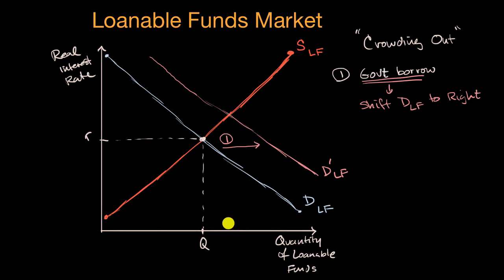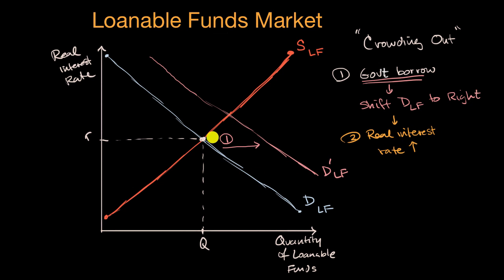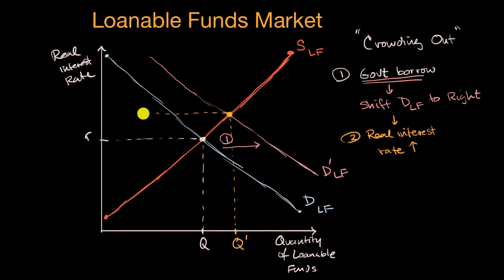Now what is that going to cause? That is going to cause our real interest rate to go up. You can see it at our new equilibrium: we do have more loanable funds being supplied and demanded — that's Q prime — but this is happening at a higher cost, at a higher real interest rate, which we'll call R prime.